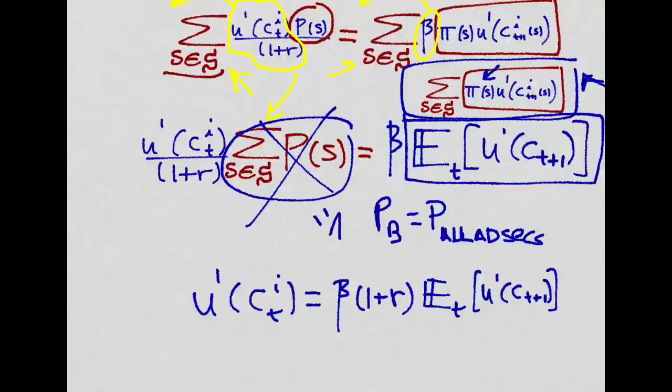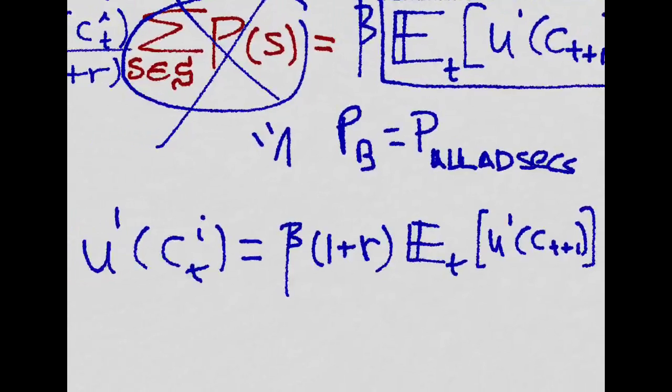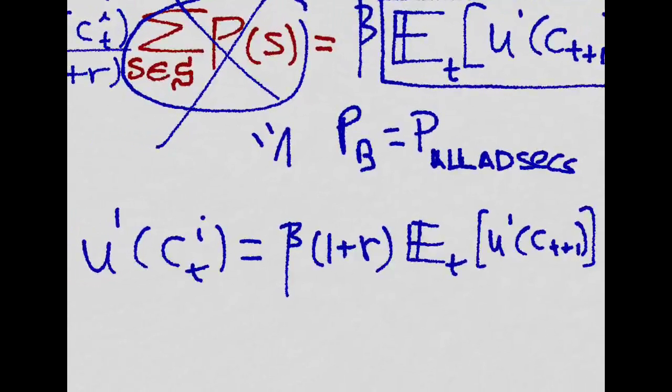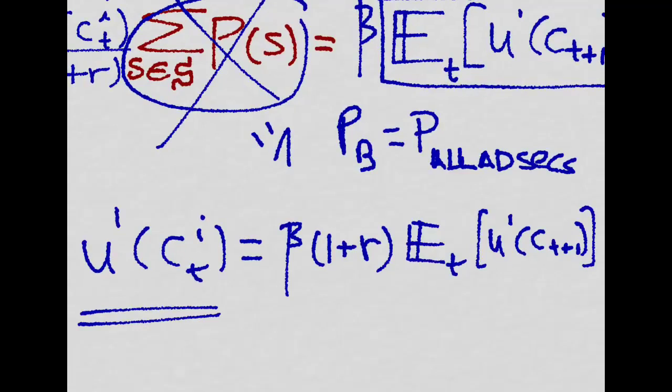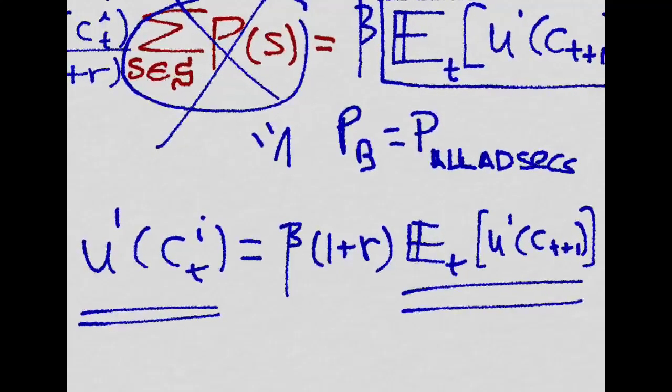Now we're left with this familiar expression for the Euler equation that relates the marginal utility today and the expected marginal utility in the future along an optimal path.